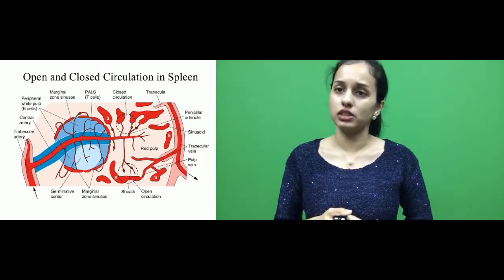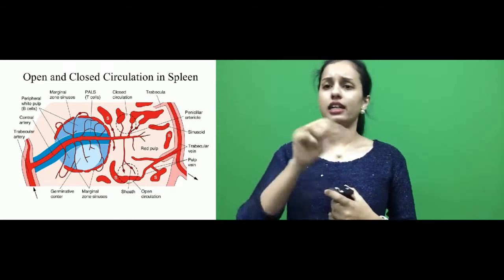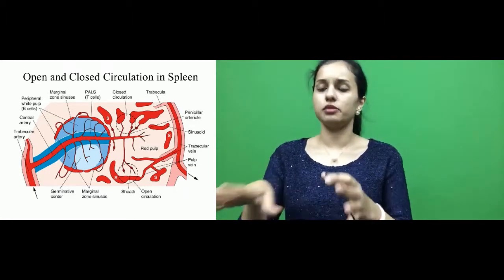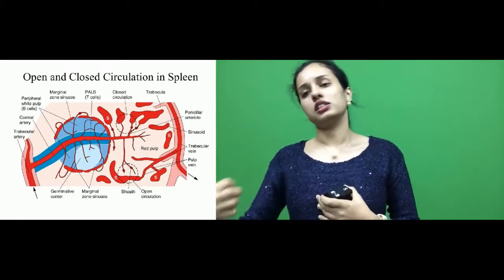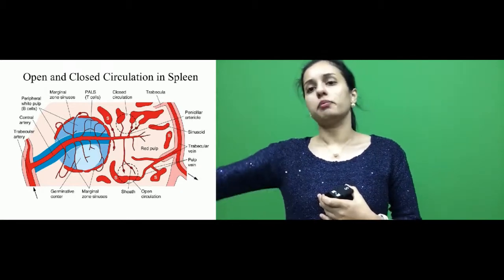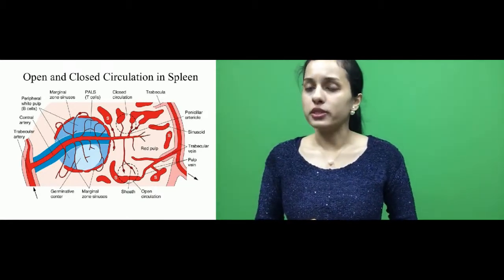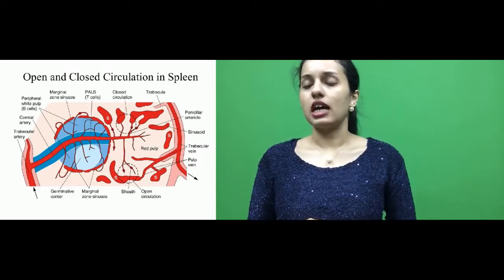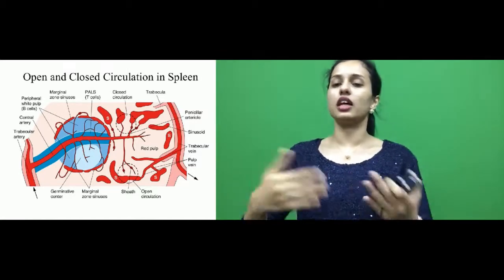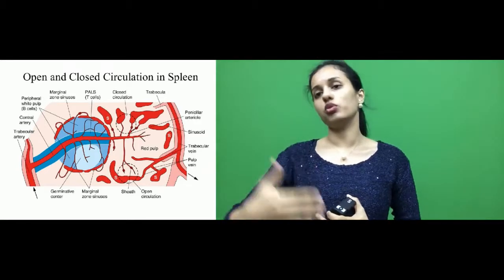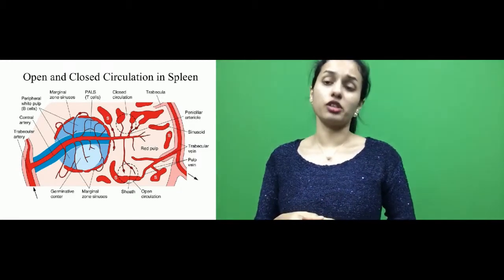This type of circulation is called closed circulation. Open circulation is where the blood flows directly into the splenic parenchyma — not into the sinuses directly — and from the splenic parenchyma it is taken up by the venous sinuses and then passes through the veins. You can see in the picture showing open circulation, where the capillaries of the pensillar arterioles directly ooze blood into the red pulp area, and then the blood travels to the sinuses.